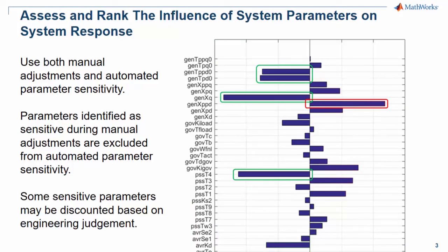We use both manual adjustments and automated parameter sensitivity to assess and rank the influence of system parameters on system response. Parameters which are identified as sensitive during manual adjustments are excluded from automated parameter sensitivity. Some sensitive parameters may be discounted based on engineering knowledge and judgment.